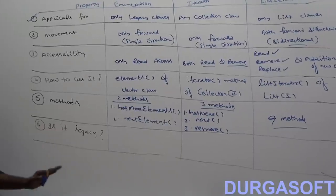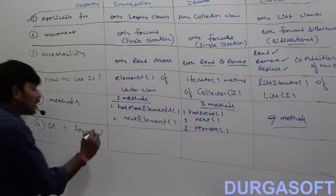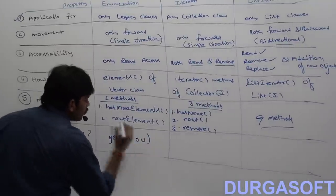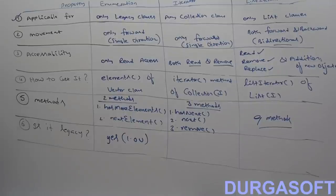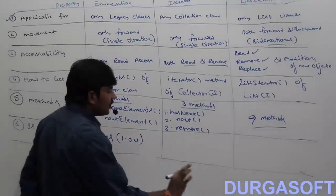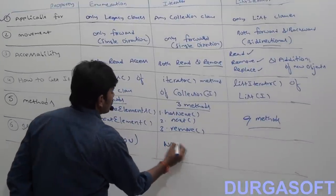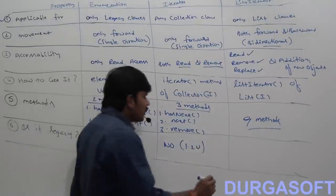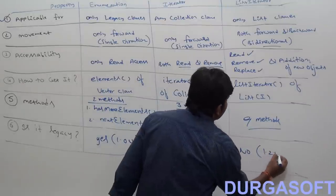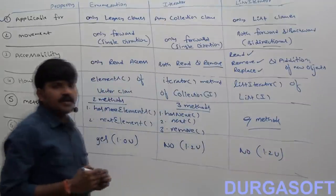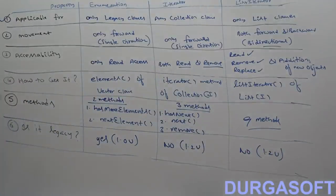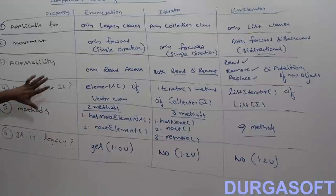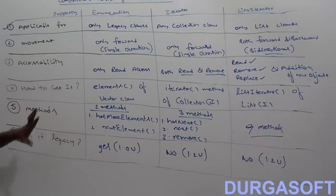Next: is it legacy or not? Enumeration is legacy because it came in Java version 1.0. What about iterator? Iterator is not legacy because it came in version 1.2. This is the simple comparison table of enumeration, iterator, and list iterator.